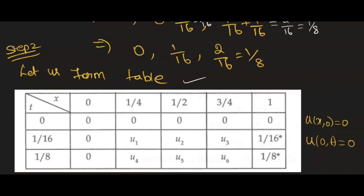Now let us form the tabular column. The x values are: 0, 1/4, 1/2, 3/4, 1. The t values are: 0, 1/16, 1/8 — because they have given only two levels. We stopped there and did not write another one. We are done with setting the tabular column by writing these t values and x values.